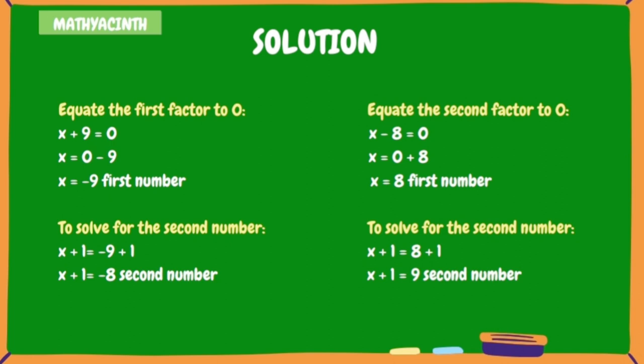To solve for the second number, x plus 1 equals negative 9 plus 1, and x plus 1 equals negative 8. To solve for the second number, x plus 1 equals 8 plus 1, and x plus 1 equals 9.